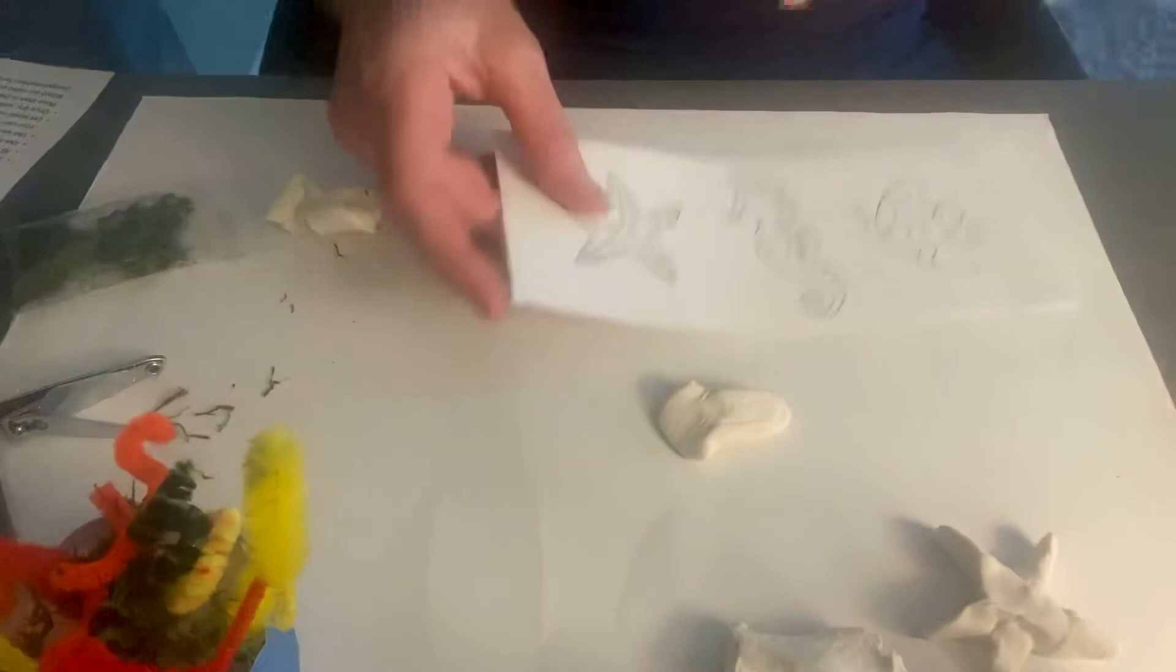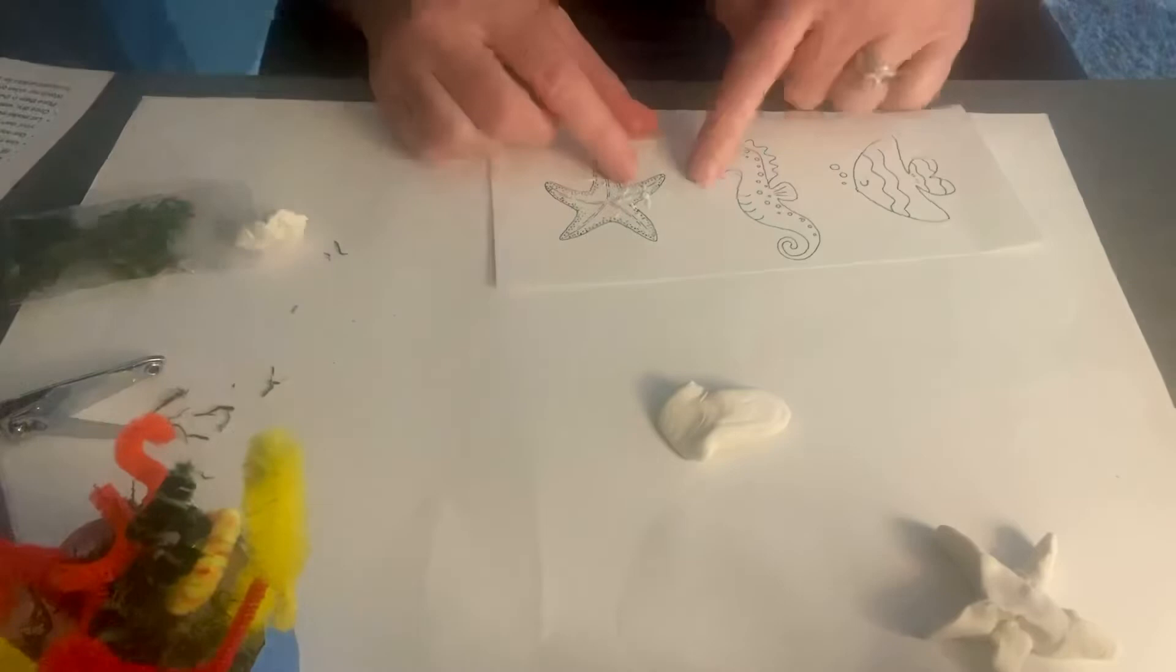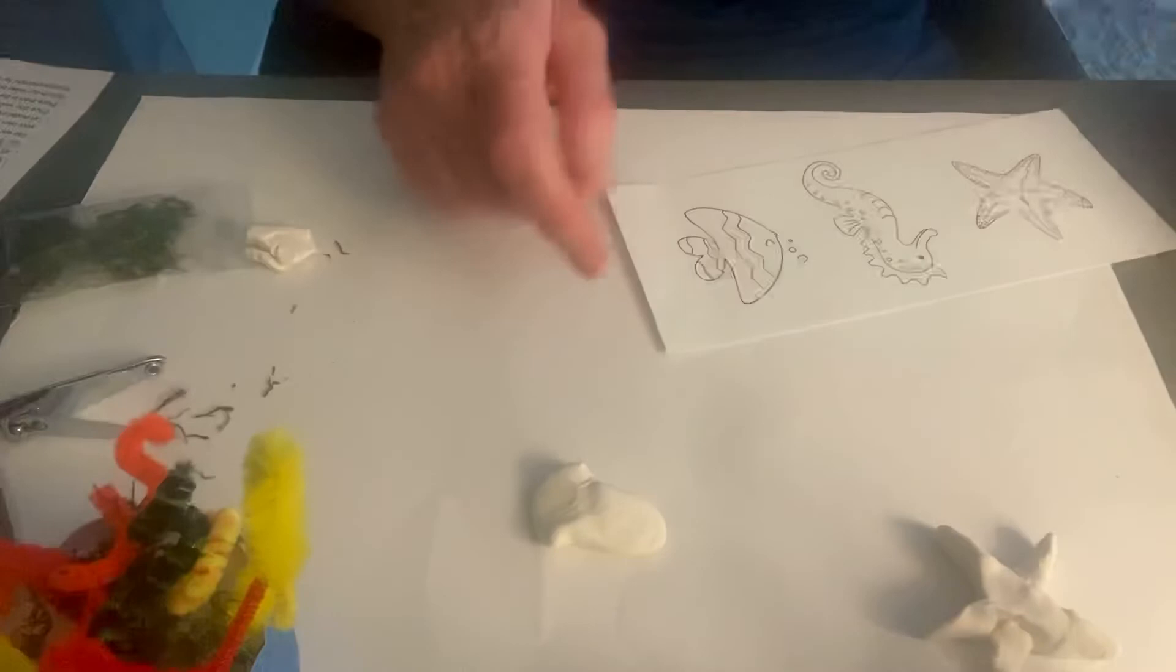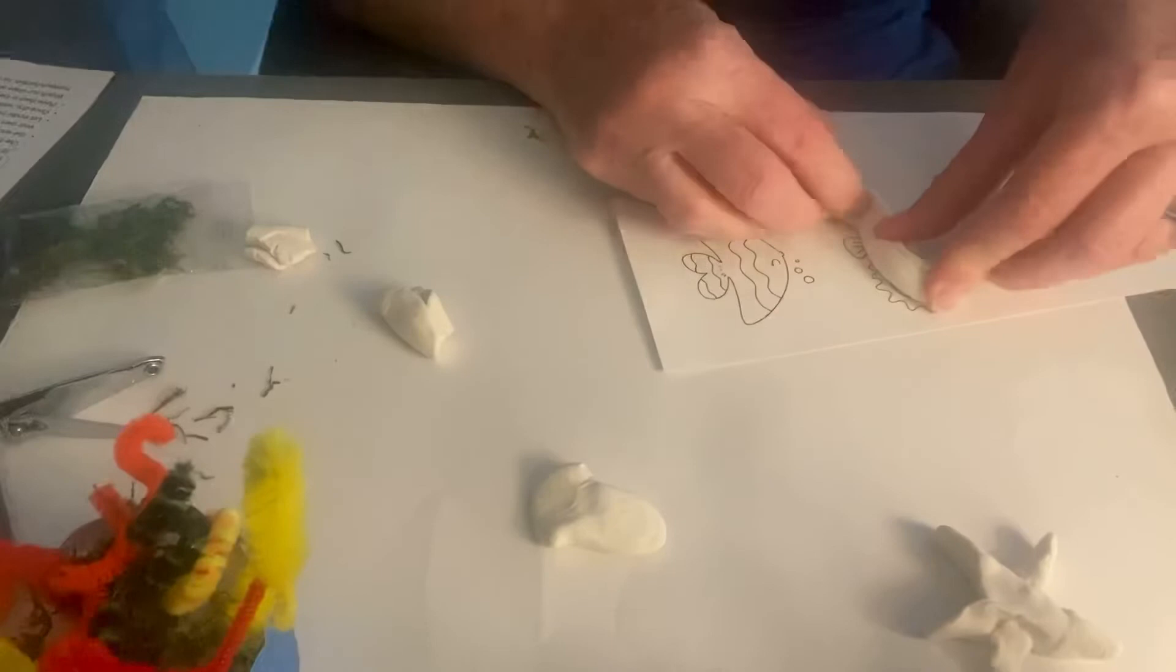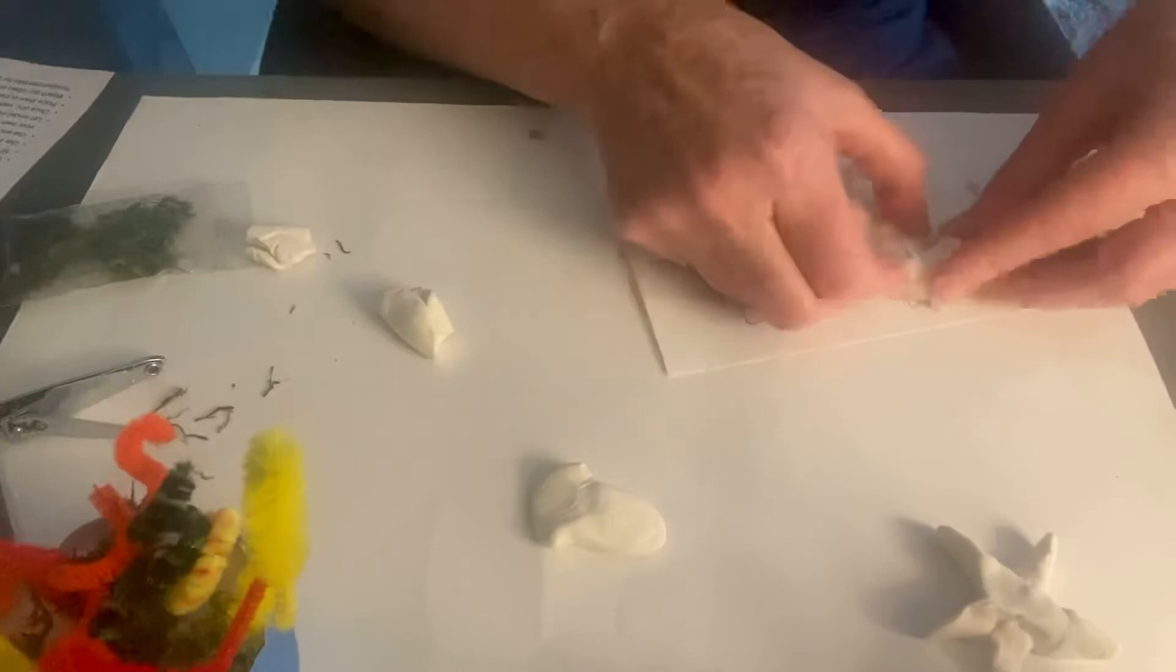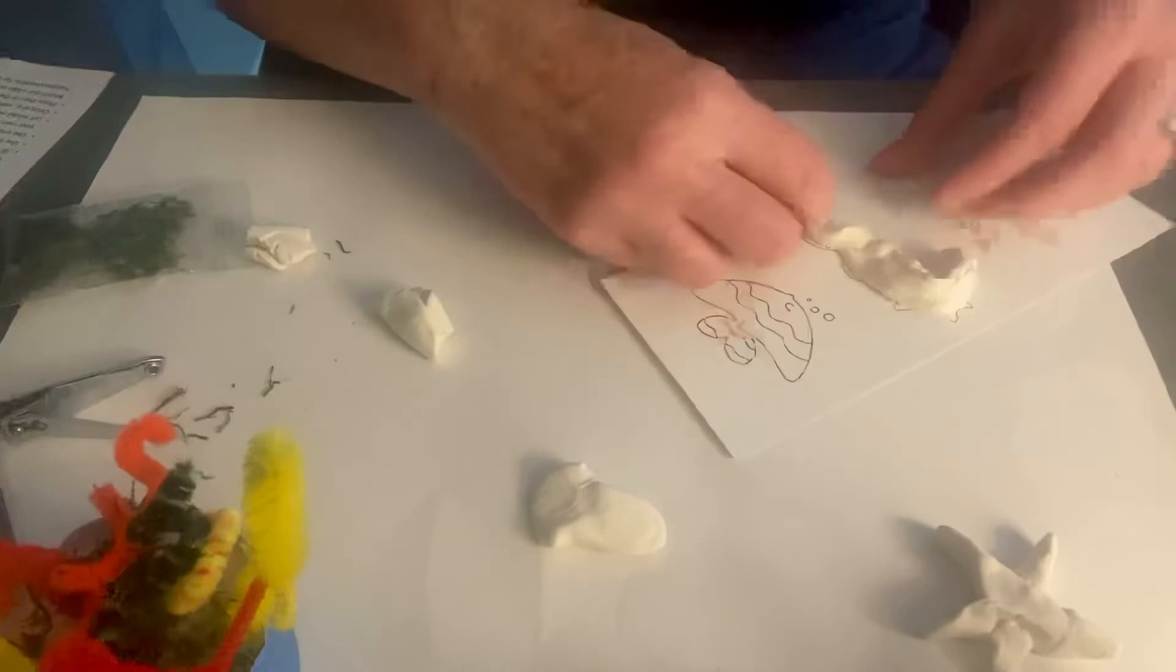And then you can make the seahorse is probably the hardest one, right? So you can practice that. Although if you look at the shape of a seahorse, it's really not that hard. So you're just going to follow along the contour of the body. Maybe curling the tail a little bit to make your seahorse. Kind of like that.